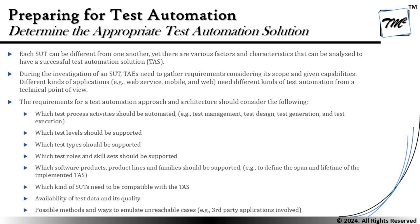Thus, we need to step out into the market with a list of characteristics of our application and find the particular tool that can serve those purposes. The requirements for a test automation approach and architecture should consider: which test process activity should be automated, which test level should be supported, which test type should be supported, which skill sets are needed, which software product lines and families should be supported, and which kinds of SUT need to be compatible with the test automation solution.